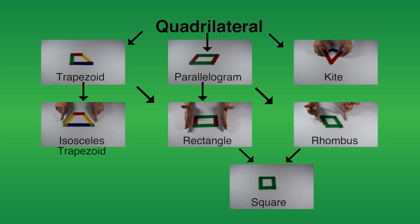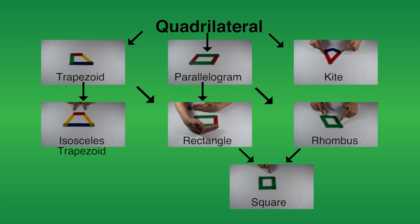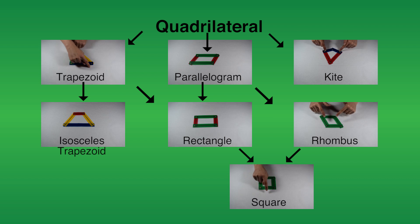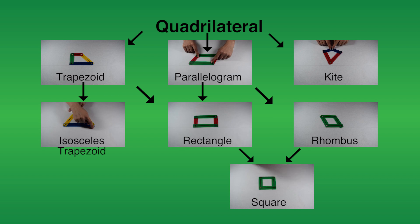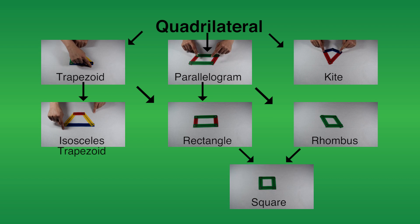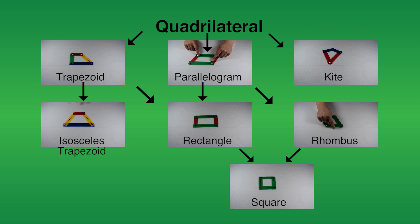Next time you see a quadrilateral, look at the characteristics of its edges and angles and see if you can find any patterns. If you do, use those patterns to give it its most specific name possible.